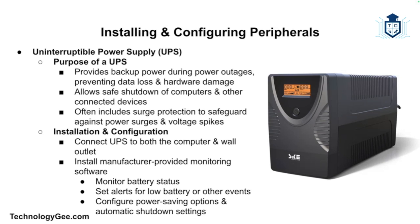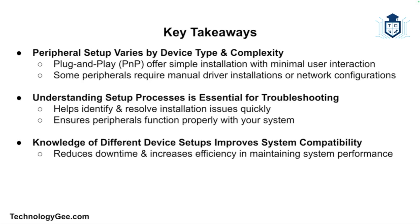Finally, we have the UPS or uninterruptible power supply. A UPS provides backup power during a power outage, allowing you to safely shut down your computer, and often includes surge protection to safeguard against power surges. To install it, connect the UPS to the computer and the wall outlet, and install any monitoring software provided by the manufacturer, which allows you to check battery status, set alerts, and configure power-saving options.